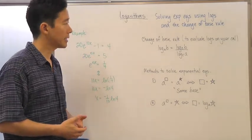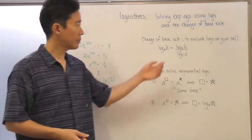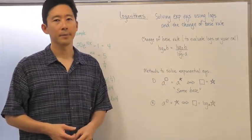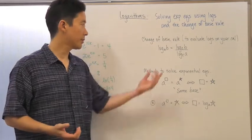The log base a of b is going to be equal to the log base c of b divided by the log base c of a. And there's your change of base form, because the thing that's changing of course is the base.